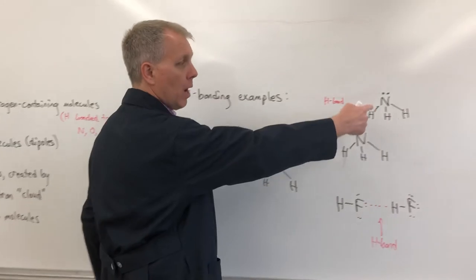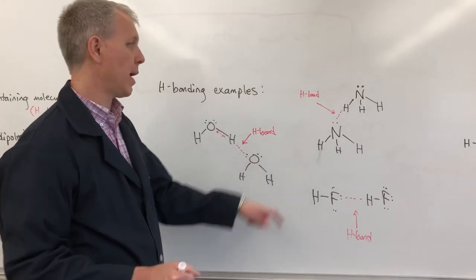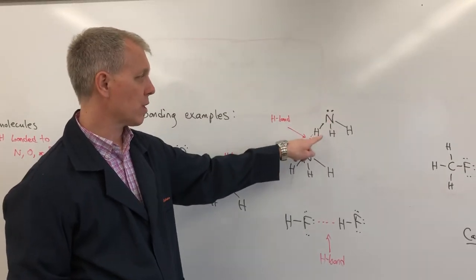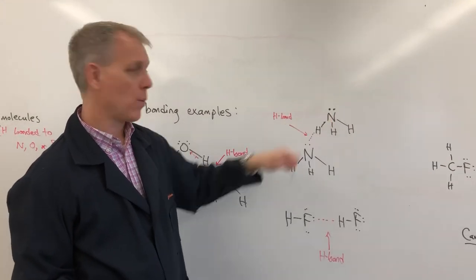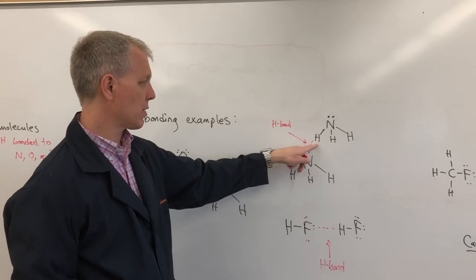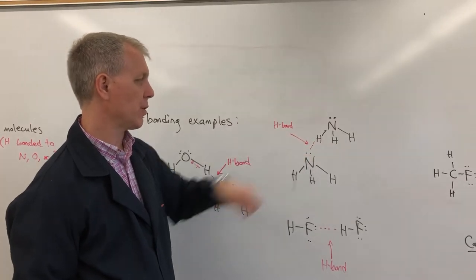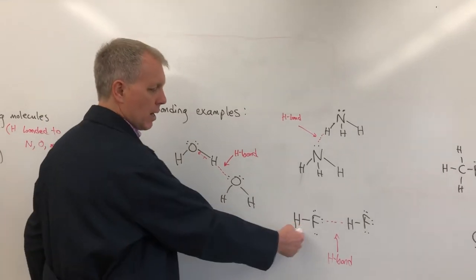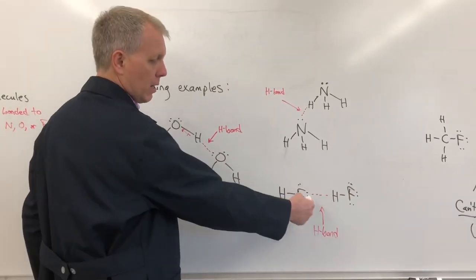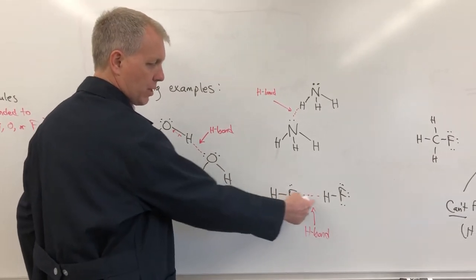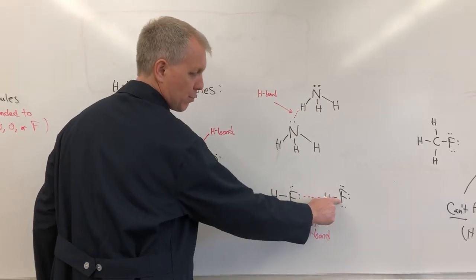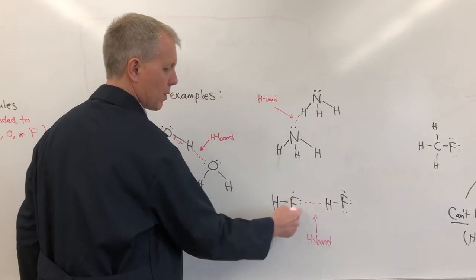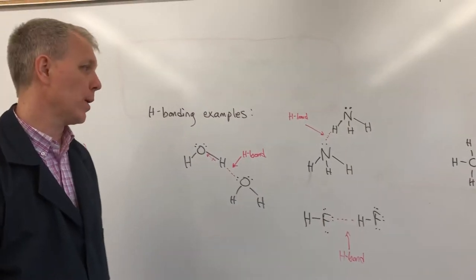Ammonia, NH₃, is another molecule that can do hydrogen bonding because hydrogen is covalently bonded to nitrogen, which pulls electrons strongly away from the hydrogen, allowing it to attract to the unshared electron pair on the neighboring nitrogen. Similarly, HF — hydrogen fluoride — forms hydrogen bonds between the hydrogen and the neighboring fluorine.